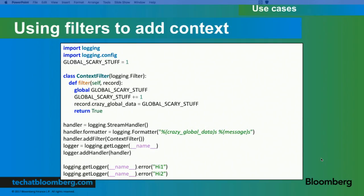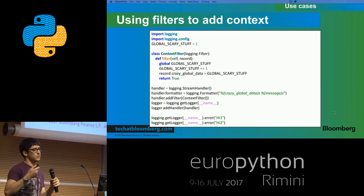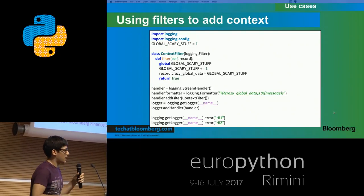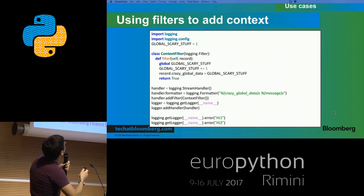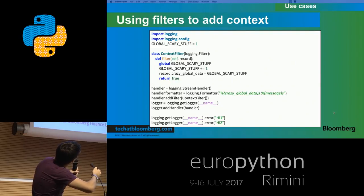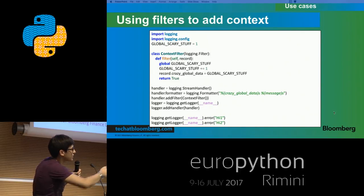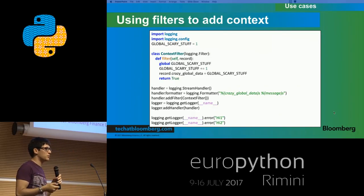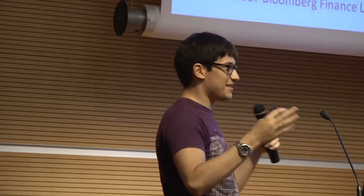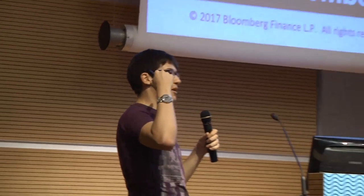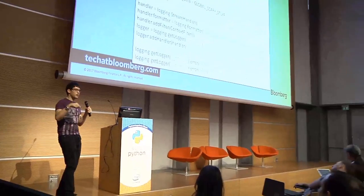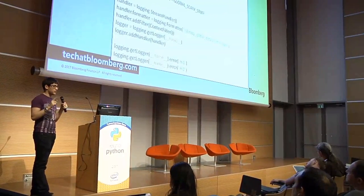Another use case: using filters to add context. From Python 3.2 there is a factory method you can configure to capture all calls whenever a log record is created, and you can add extra contextual information. Before 3.2, a convention is to overuse filters to add information. You use a filter as a global hook that all logs pass through, since filters can be added to both loggers and handlers, and you enrich the log record with something extra. Where would you attach it — to the logger or the handler? In the handler — because if you do it in the logger it will only happen for that one logger, not the full hierarchy.